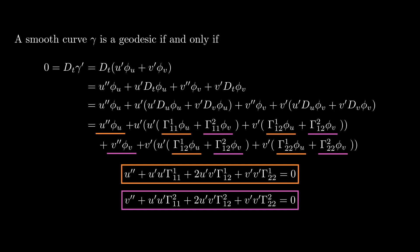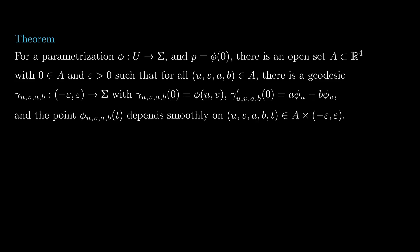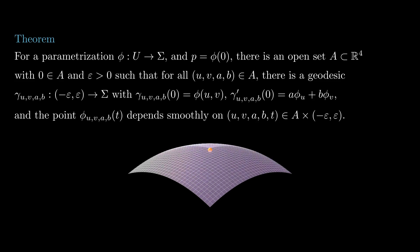This is a linear second-order ordinary differential equation with smooth coefficients, so standard existence and uniqueness theory applies. Take a parametrization phi and let p be the image of zero. Then there is an open neighborhood A of zero in R4 and a positive epsilon such that for each (u, v, a, b) in A, there is a geodesic gamma with initial position phi(u,v) and initial velocity a*phi_u + b*phi_v, defined on the interval (-epsilon, epsilon). Moreover, the point gamma(u,v,a,b)(t) depends smoothly on all five variables.